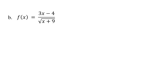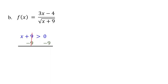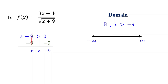When a radical appears in the denominator, for the function to be defined, the expression under the radical must be strictly greater than zero — not greater than or equal to zero. This is to exclude values of x that would make the denominator zero. Solving this inequality, we find that x is greater than negative 9. Therefore, the domain of this function is all real numbers greater than negative 9.